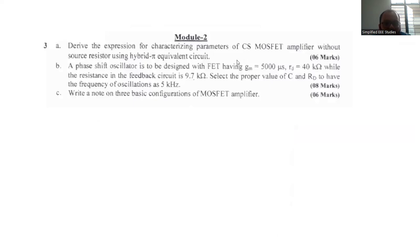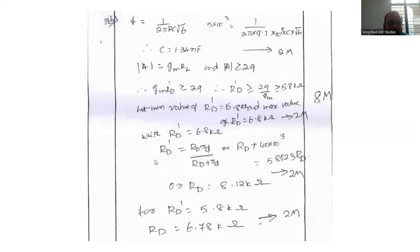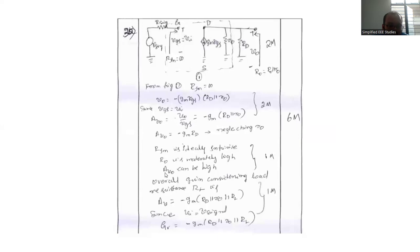Question number 3A. Derive the expression for characterizing parameters of CES MOSFET amplifier without source resistor with hybrid pi equivalent circuit. For 3A you can go for this particular circuit diagram you have to mention. General formula you have to talk about. Gain formula. Ultimately you have to reach up to GD equals GM into RD parallel R0 parallel RL. This expression you are supposed to mention.